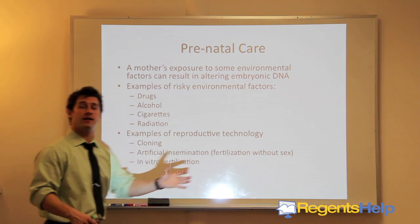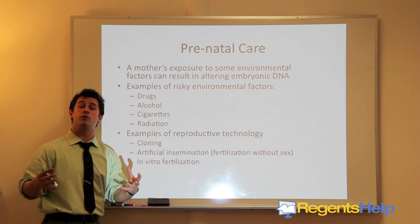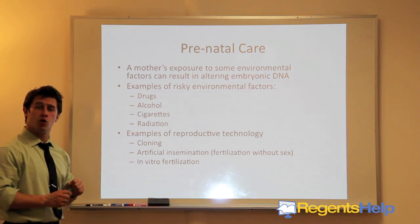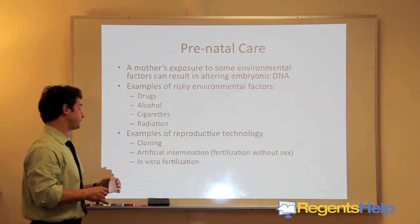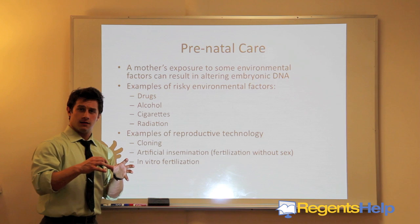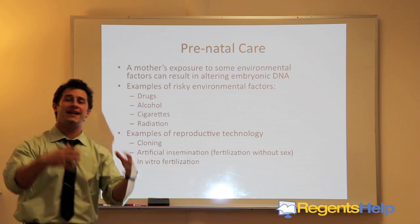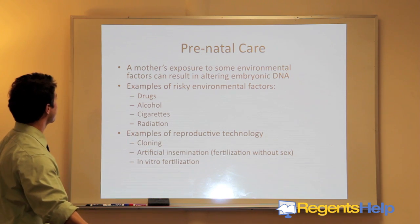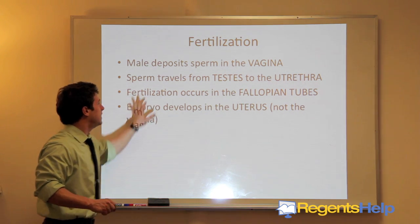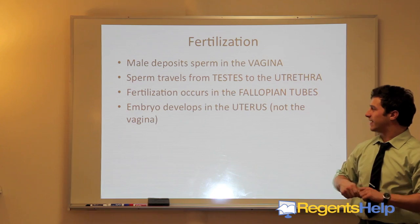Some reproductive technologies that have given us real advances in the field include cloning — it is theoretically possible to clone a human by taking DNA from a mother's skin cell and putting it into a fertilized egg without a nucleus. Artificial insemination is fertilization without sex, by injecting sperm cells or sperm DNA into a fertilized egg. In vitro fertilization means creating this natural fertilization process in the lab.